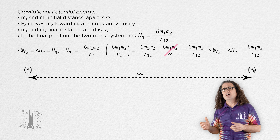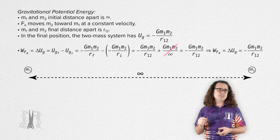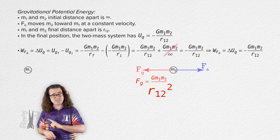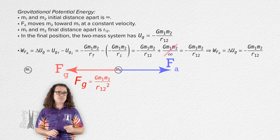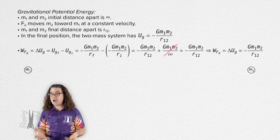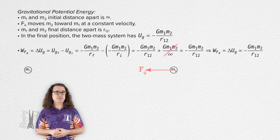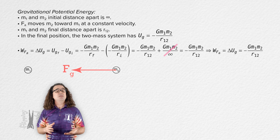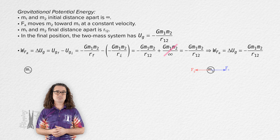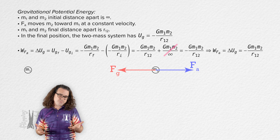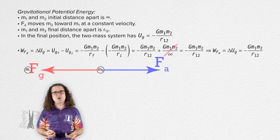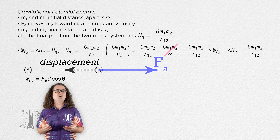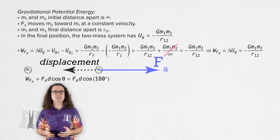Student: Why is the work negative? Teacher: The reason the work done by an external force to move mass 2 at a constant velocity from an infinite distance to a distance r₁₂ is negative is because it takes negative work to move mass 2 at a constant velocity. Without the external force, mass 2 would accelerate toward mass 1 and would also have kinetic energy when it arrives at its final position. The external force removes energy from the two-mass system. Also, the external force on mass 2 is directed away from mass 1 while the displacement of mass 2 is toward mass 1, so the force and displacement are opposite in direction, making the angle 180 degrees, and the cosine of 180 degrees is negative 1.